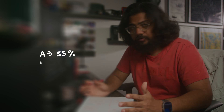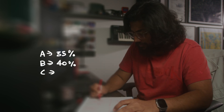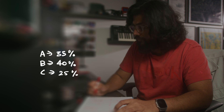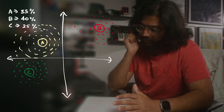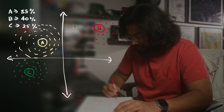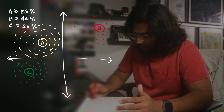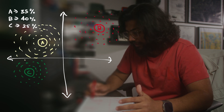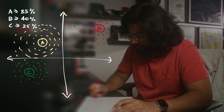Let's say A gets about 35% of the votes, B gets about 40%, and C gets about 25%. The most strange part about this is that candidate B wins with 40% of the votes, which is quite odd given that if you combine candidate A and candidate C, they form the majority with 60% of the votes.